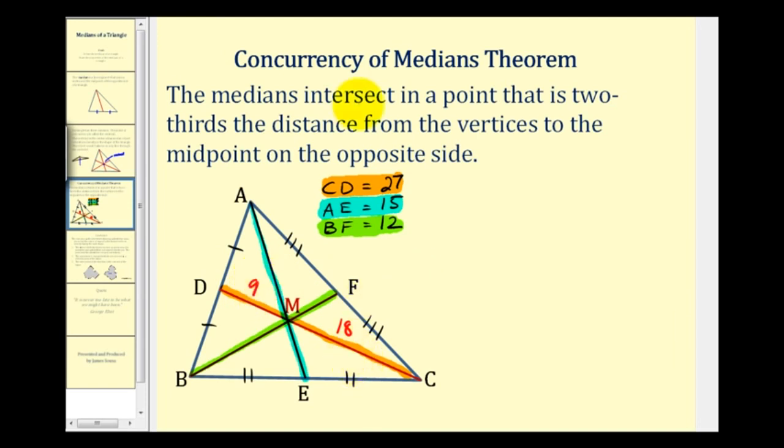So this is another property that this theorem tells us. So if we know that segment AE has a length of 15 units, then AM would be two-thirds of 15. That would be 10. Leaving one-third the total length for ME. So that would be five.